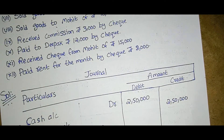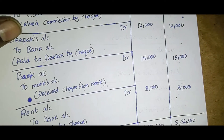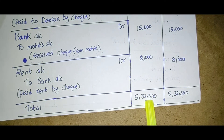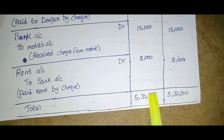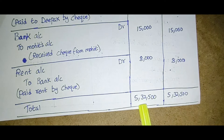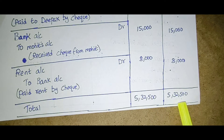If we add all the debit amounts and credit amounts, they should be equal. The total debit amount is five lakh thirty-two thousand five hundred, and the total credit amount is also five lakh thirty-two thousand five hundred. So this confirms the journal entries are balanced.